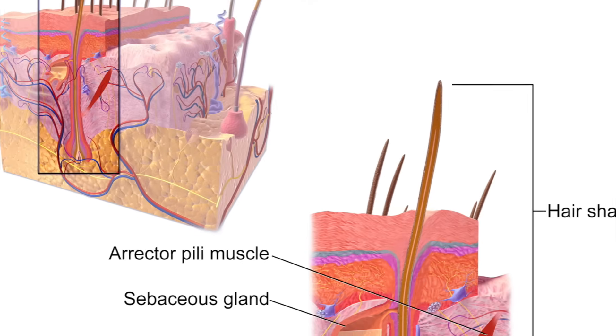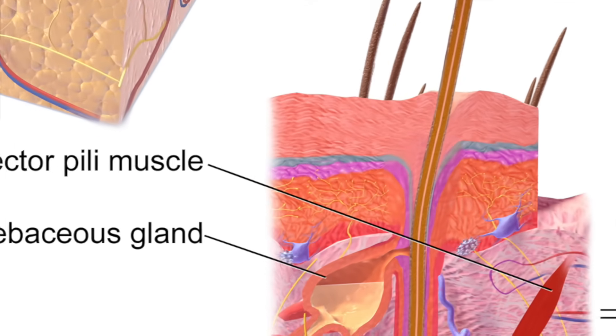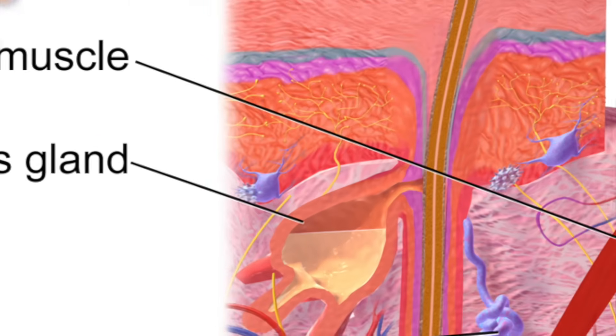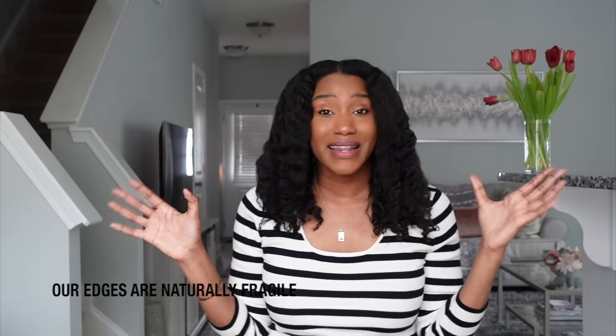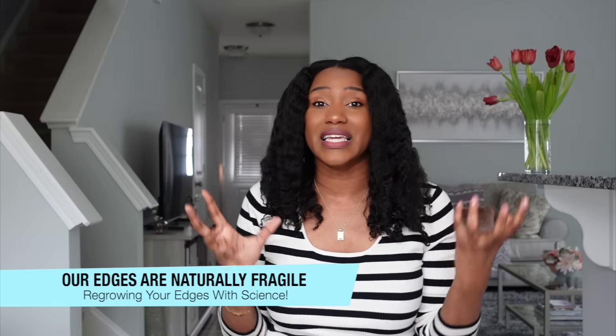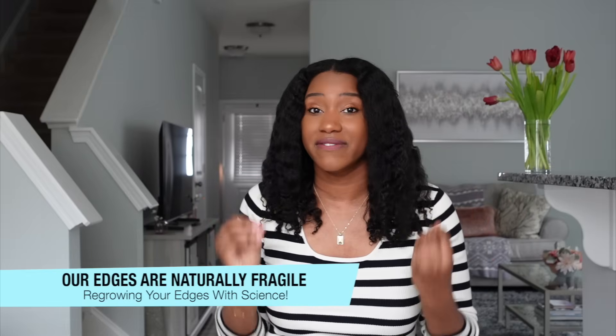On top of that, in the edge region, you have fewer sebaceous glands. A lack of sebaceous glands means a lack of moisture retention, and with a lack of moisture retention you're going to get dryness and breakage. So automatically, our edges are naturally very fragile — that's what's going on behind the scenes.